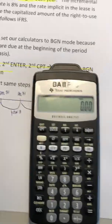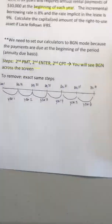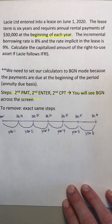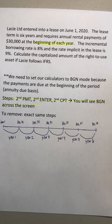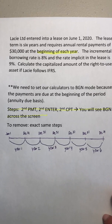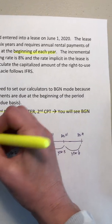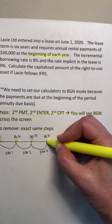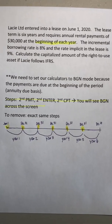Let's talk about what this begin mode actually means. Here's a timeline. In this question, the lease is six years, and I've drawn out a timeline for six years. If we're talking about an annuity due or a lease payment, we're going to have six payments, but the payments are due at the beginning of each period. So we're going to have a payment right here at the start, and then one, two, three, four, five, six — those are payments under an annuity due basis.